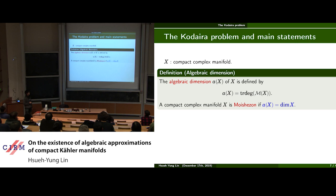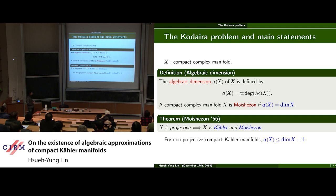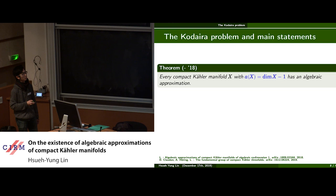Let X be a compact complex manifold. The algebraic dimension of X is defined to be the transcendence degree of its field of meromorphic functions. A compact complex manifold is called Moishezon if its algebraic dimension is maximal, equal to the dimension of X. Moishezon's projectivity criterion says that a compact complex manifold is projective if and only if it is Kähler and Moishezon. So for non-projective compact Kähler manifolds, the maximum value of algebraic dimension is the dimension of the manifold minus one. The second main result: given a compact Kähler manifold which is non-algebraic but whose algebraic dimension is maximal among all non-algebraic compact Kähler manifolds, these manifolds also have an algebraic approximation.